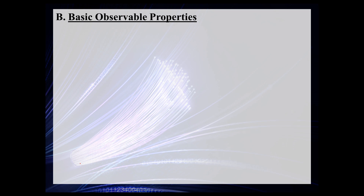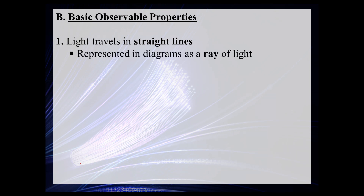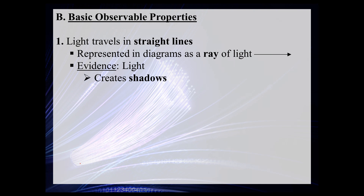In terms of basic observable properties, we'll look at three of them. The first is that light travels in straight lines. We represent this on diagrams as a ray of light — a straight line with an arrow indicating the direction the light is moving. Evidence that light travels in straight lines includes: one, the fact that light can cast shadows, and two, light does not appear to bend around corners.